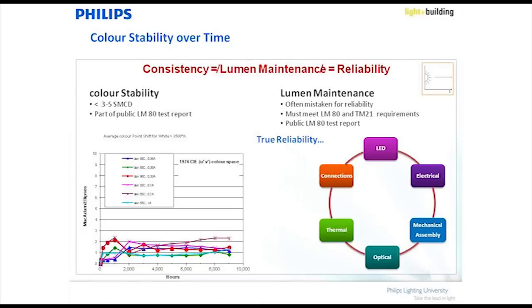What quantitative measurement do we want to use? We call it delta u-prime v-prime. There are different points we can measure on the CIE color chromaticity diagram to confirm that the color in the center versus the color at an angle is going to be the same.